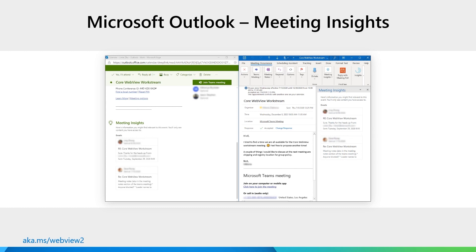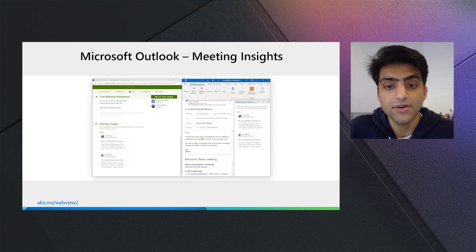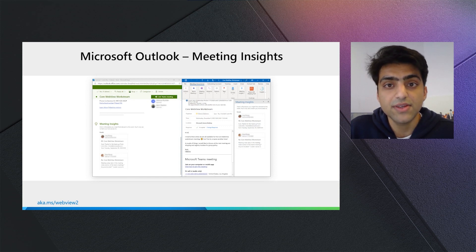The second case study I want to highlight is Microsoft Outlook. Microsoft Outlook is improving their native application with WebView2. Microsoft Outlook has always had a Meeting Insights feature on their web version. Now, the Outlook team wanted to create the same experience in their native application, and they can easily with WebView2. WebView2 allows them to even share the same code base. So this is a great example of how Microsoft is using WebView2 to improve their native application experience.